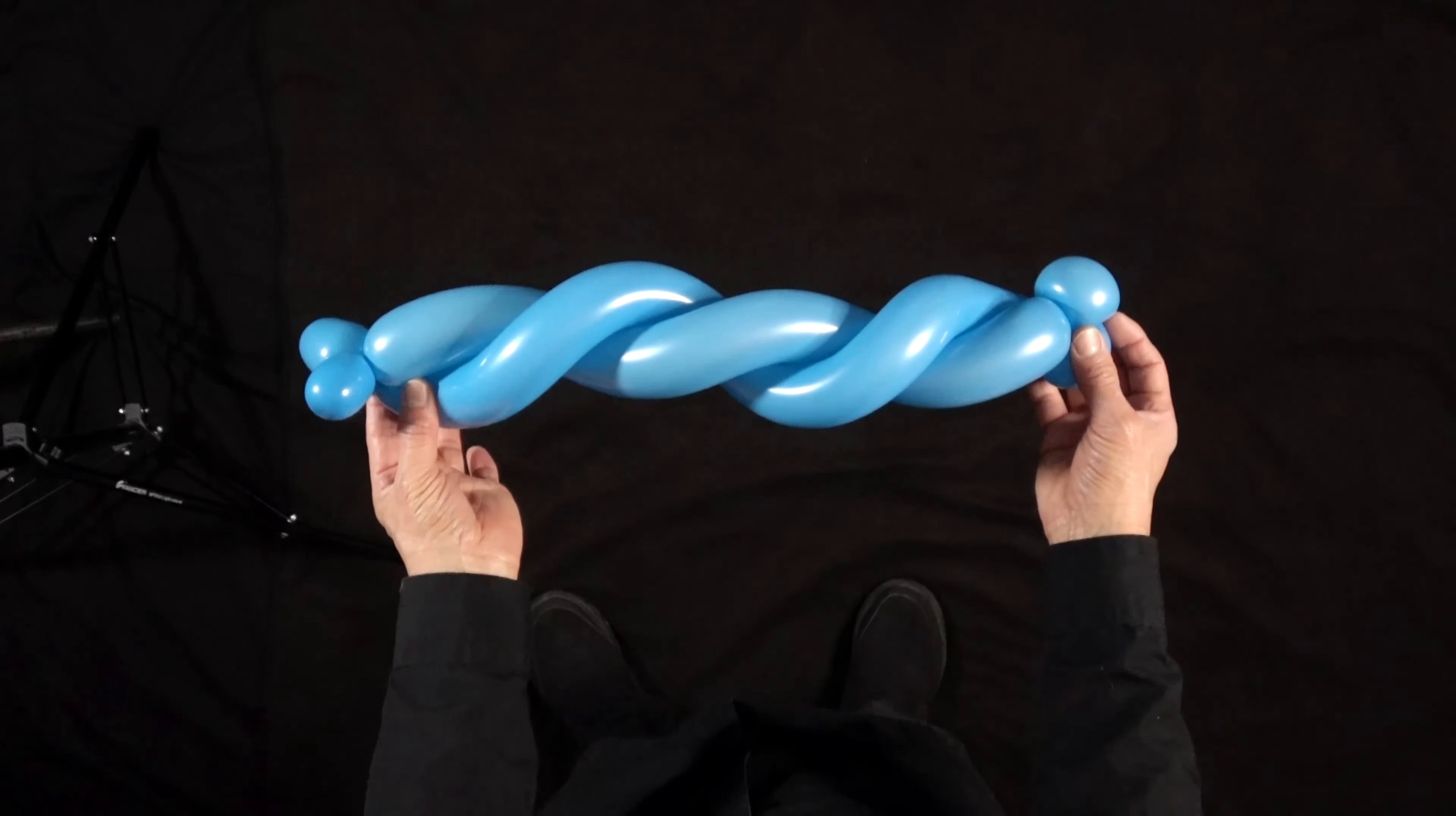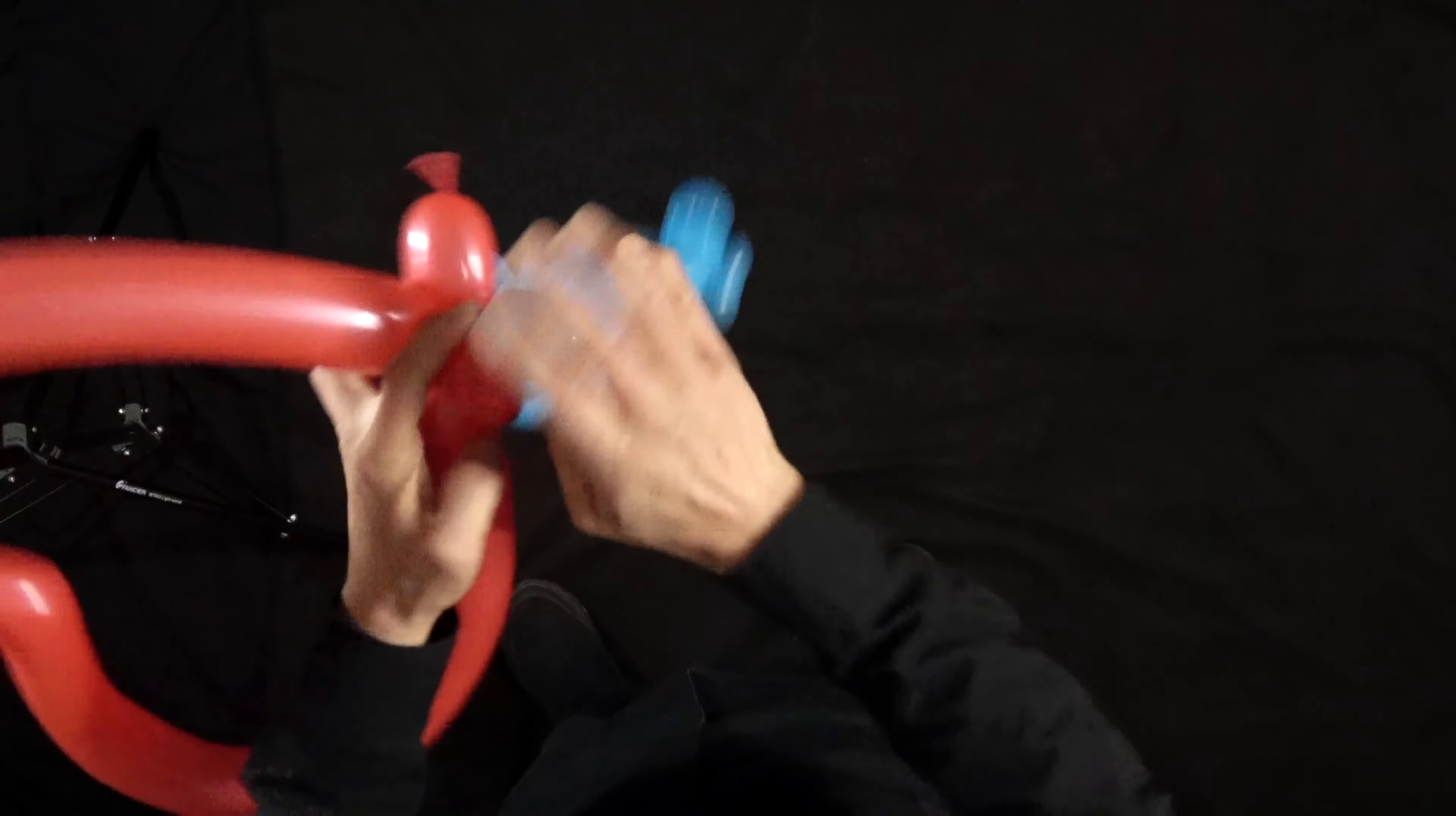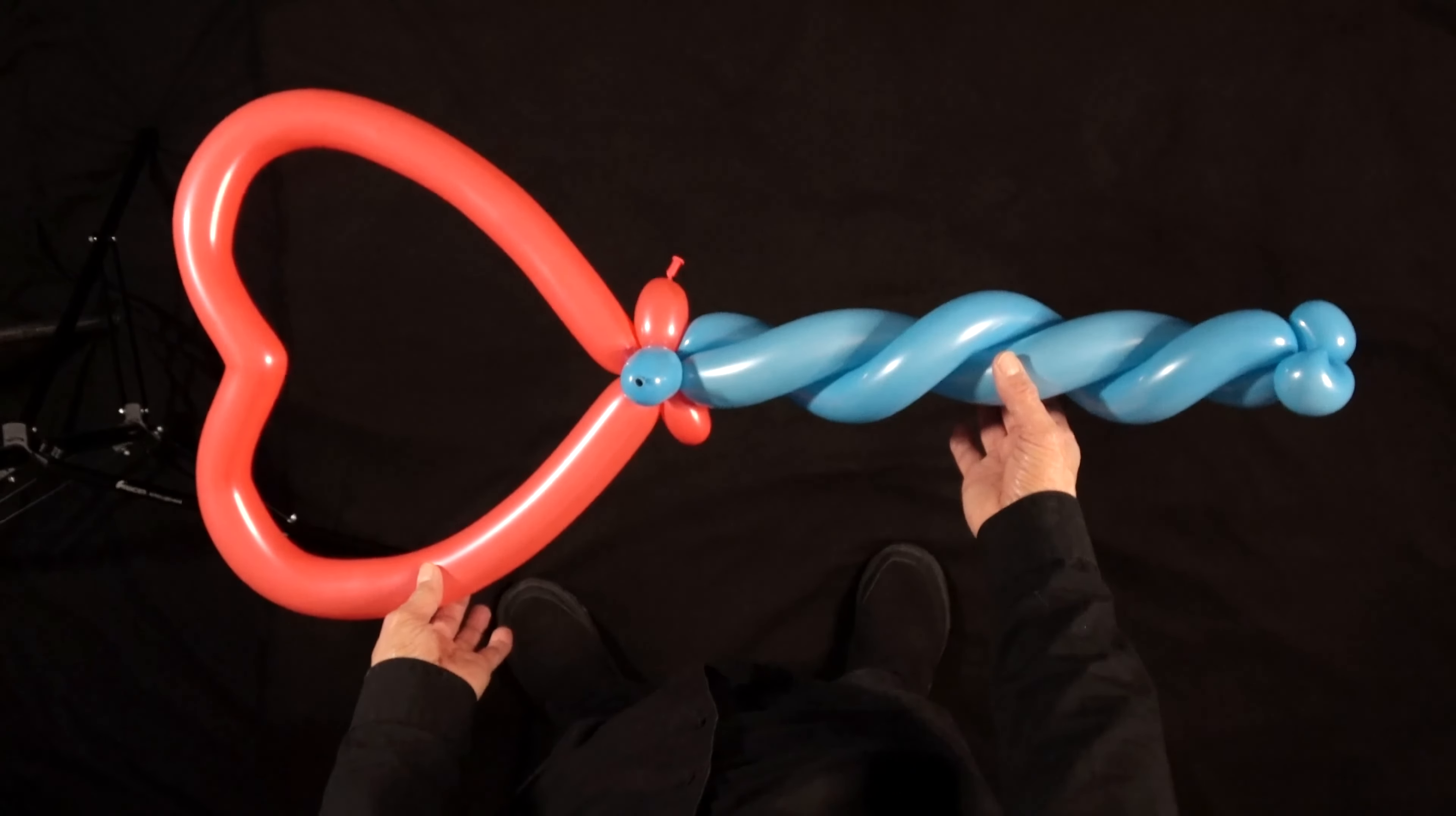Now all we have to do is put the heart on the stick. Now we have these two basic twists here, and all you're going to do is twist them into these here. And there you have a heart on a stick.